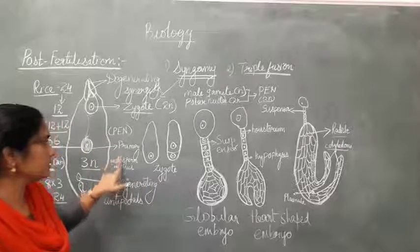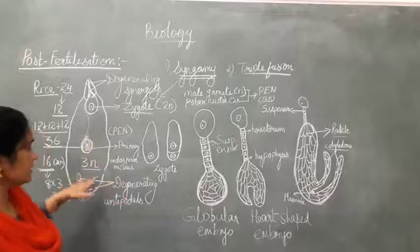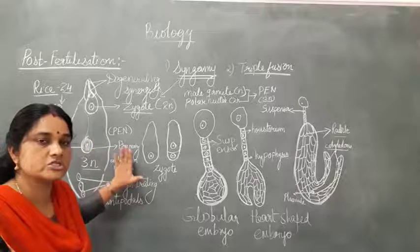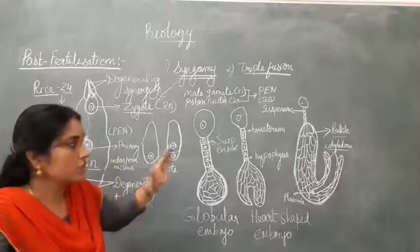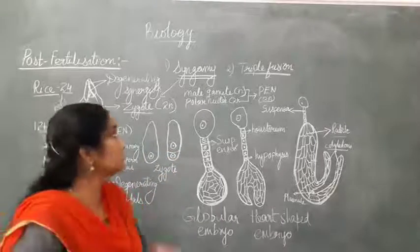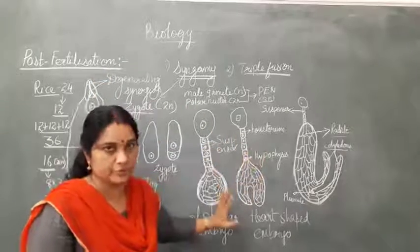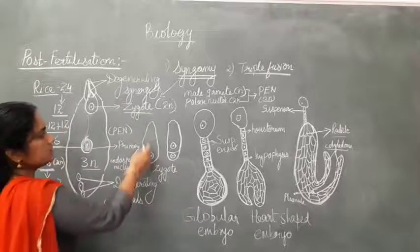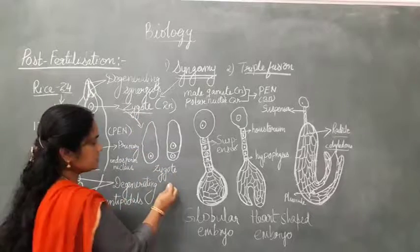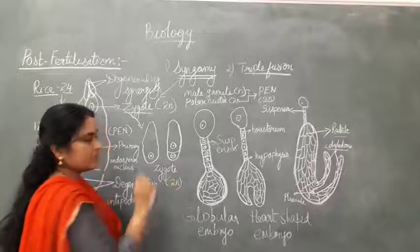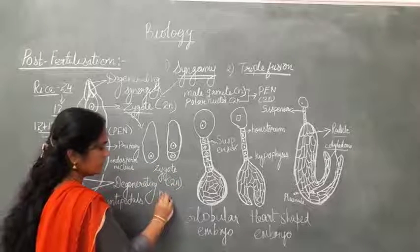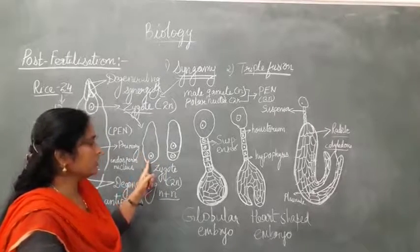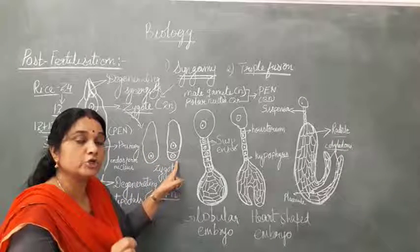Now, the second post-fertilization stage: development of the embryo. The zygote is diploid (2N), formed by fusion of male and female gametes. The diploid zygote undergoes asymmetric mitotic division — meaning the resulting cells are of unequal size — producing a large apical cell and a small cell rich in cytoplasm.